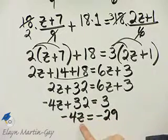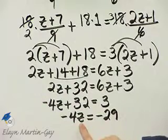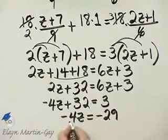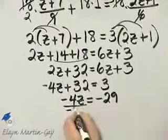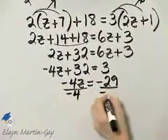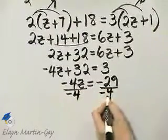How do we finish solving? Divide both sides by the coefficient of z which is negative 4. I'm going to go ahead for space purposes and write it like that.